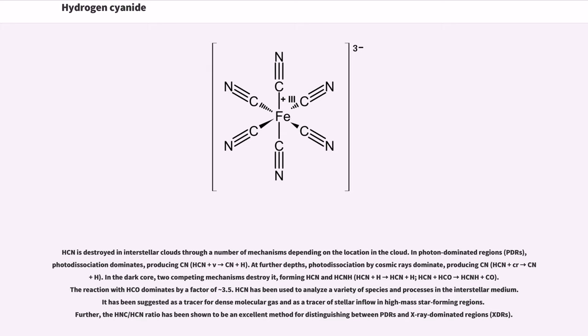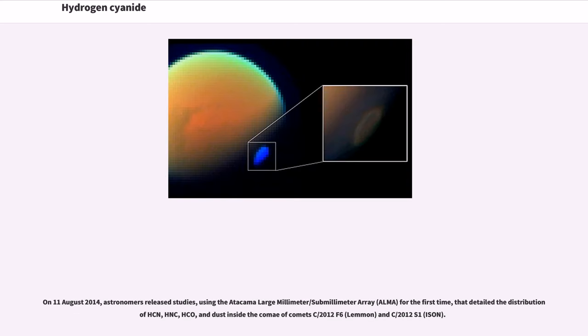HCN has been used to analyze a variety of species and processes in the interstellar medium. It has been suggested as a tracer for dense molecular gas and as a tracer of stellar inflow in high-mass star-forming regions. Further, the HNC/HCN ratio has been shown to be an excellent method for distinguishing between PDRs and X-ray dominated regions.